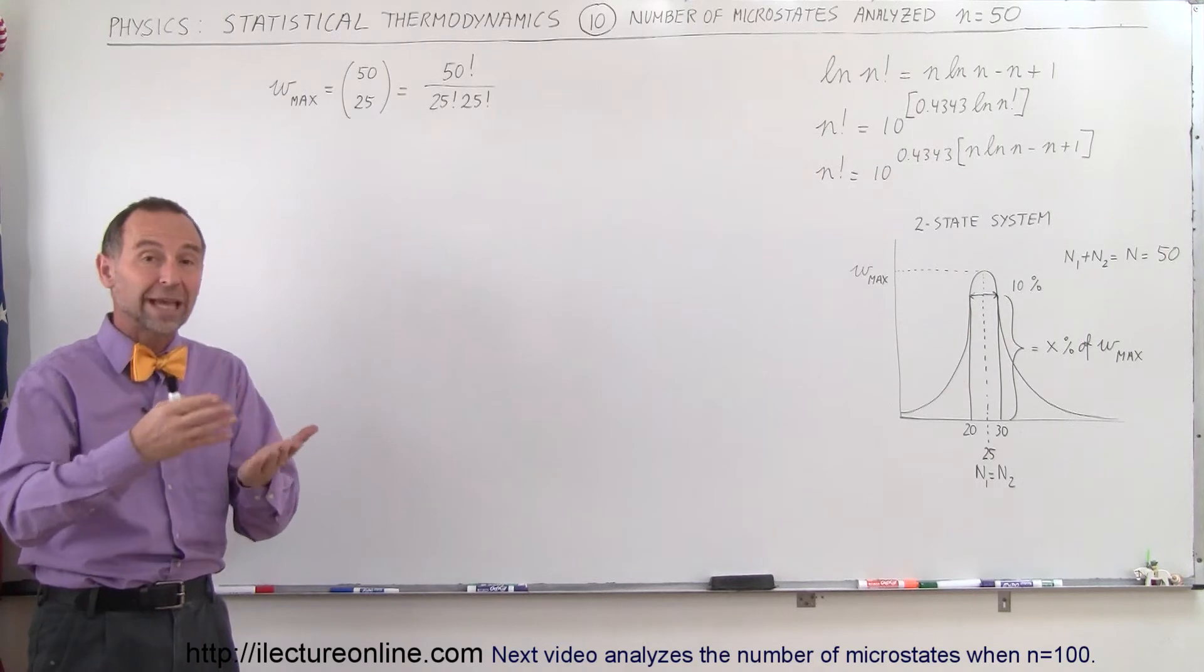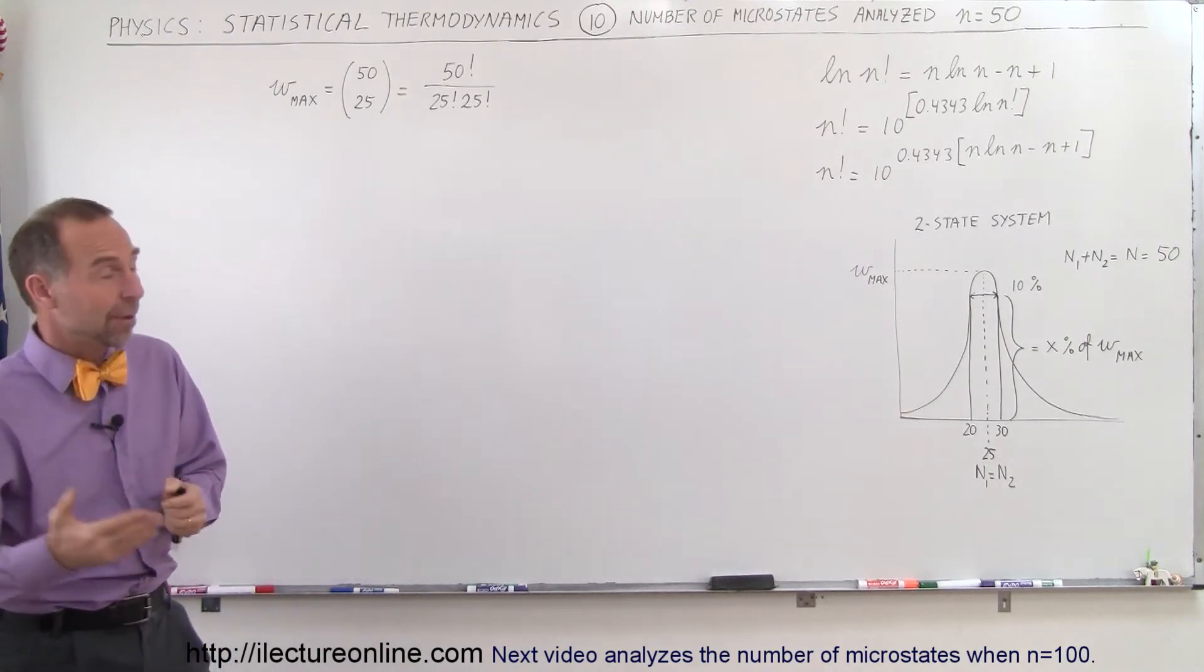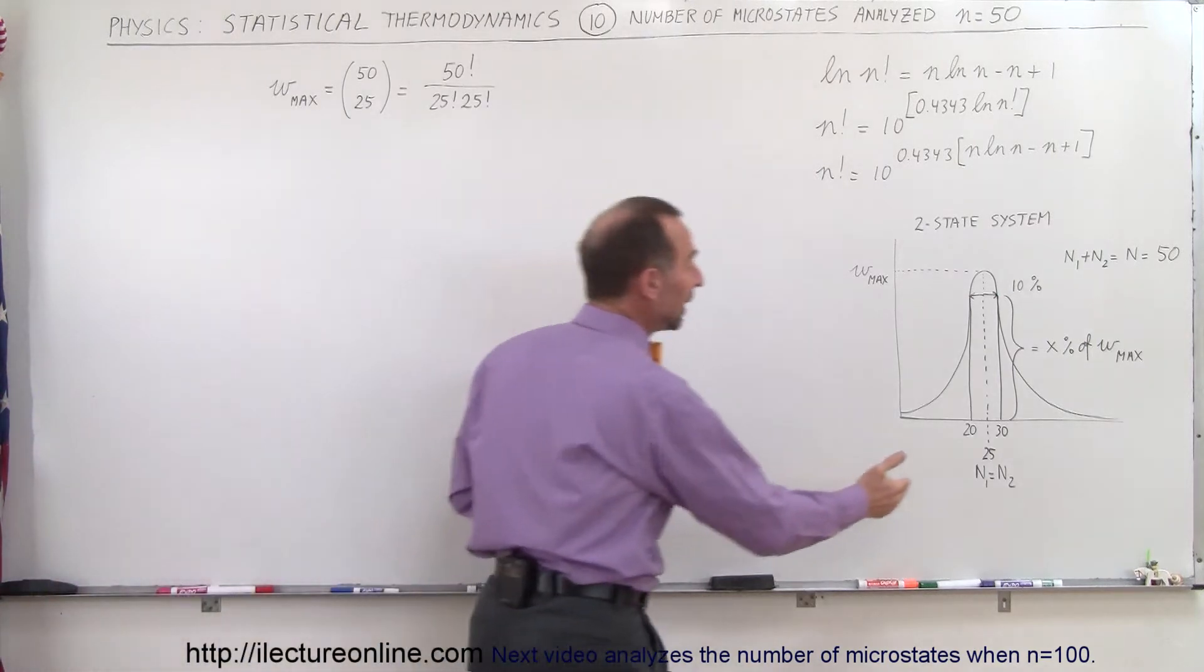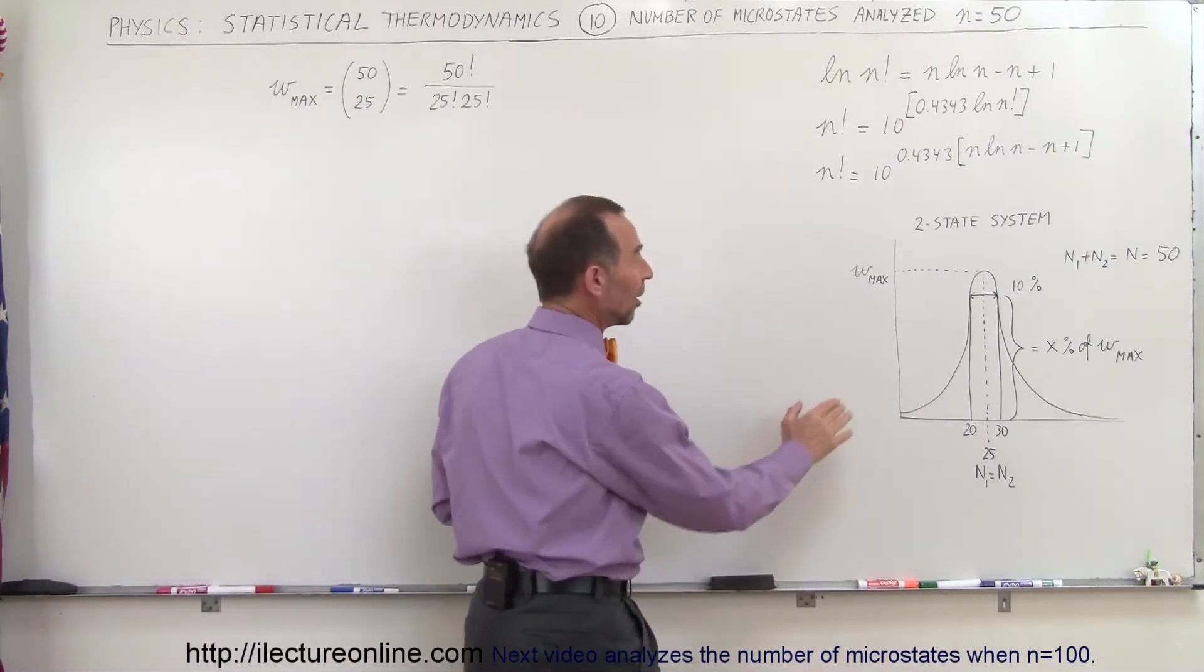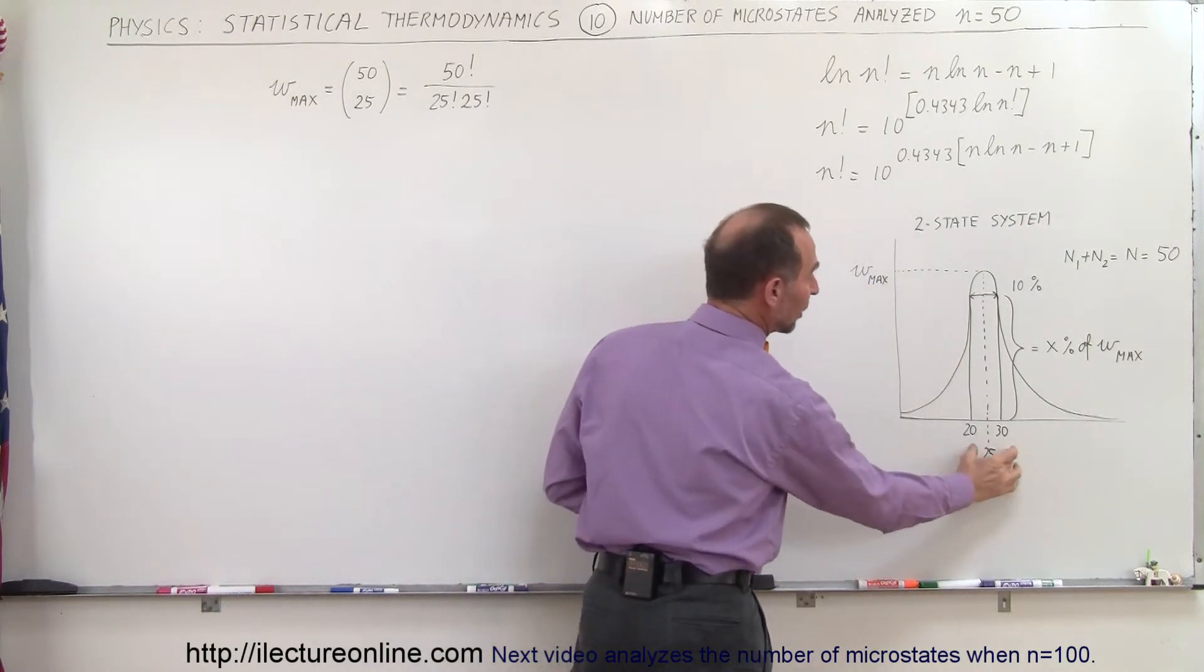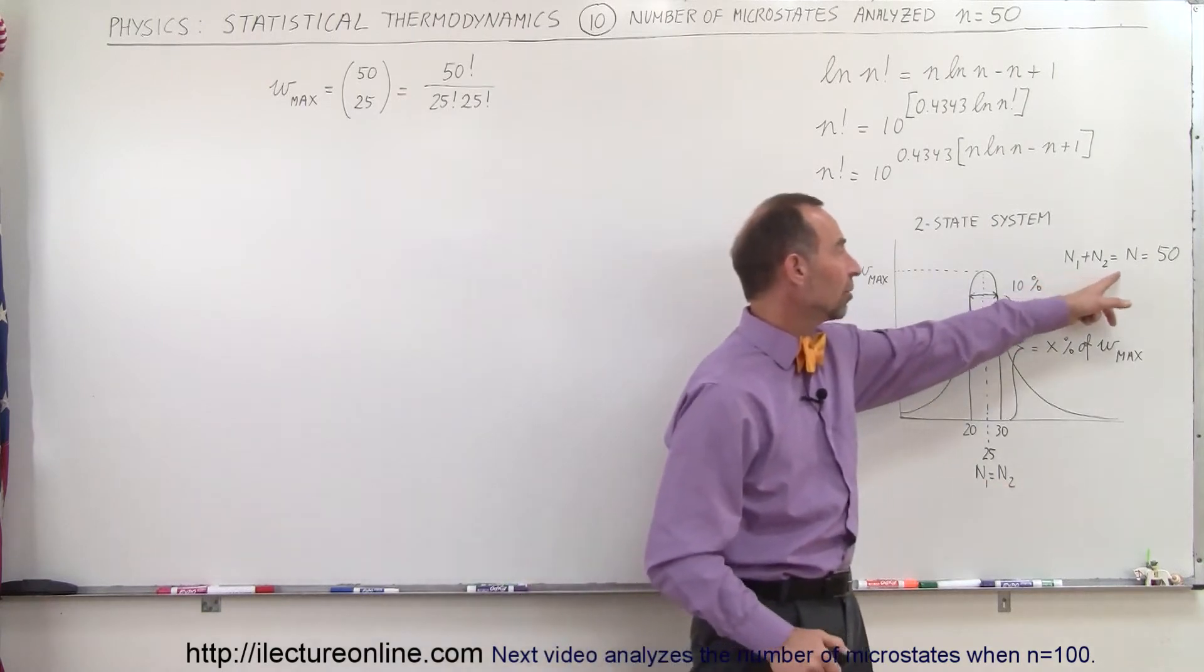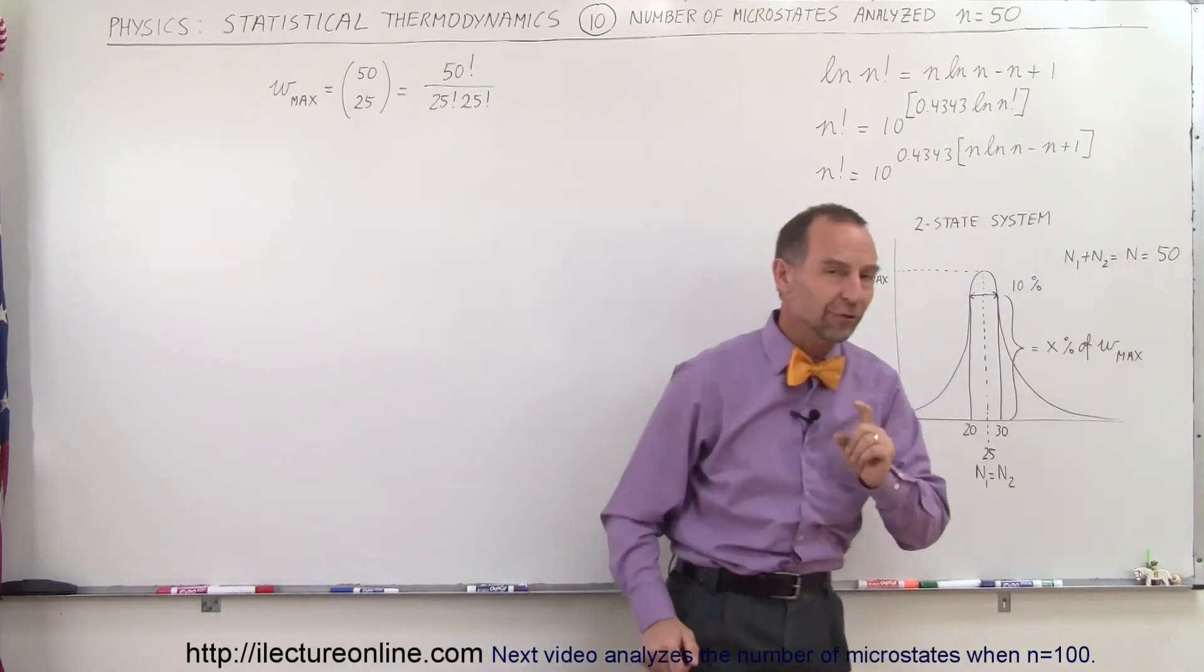They come down, they're either heads or tails. And so what are the number of microstates that we can have? That depends upon how many will be heads and how many will be tails. The max number of microstates will occur when the number of heads and tails are equal. We have 25 of each when n1 equals n2. Remember that n1 plus n2 is equal to n, which is equal to 50.